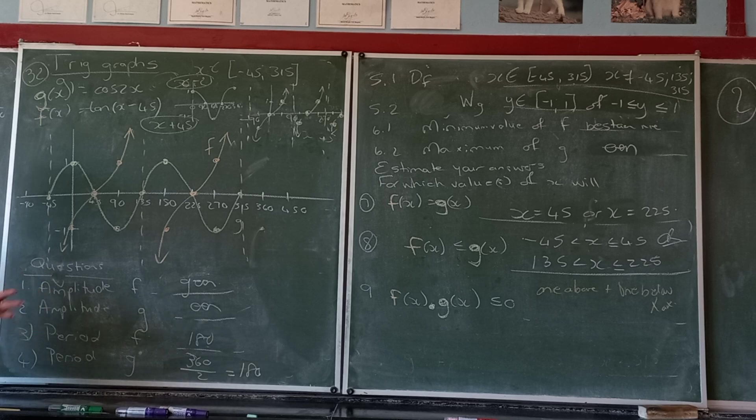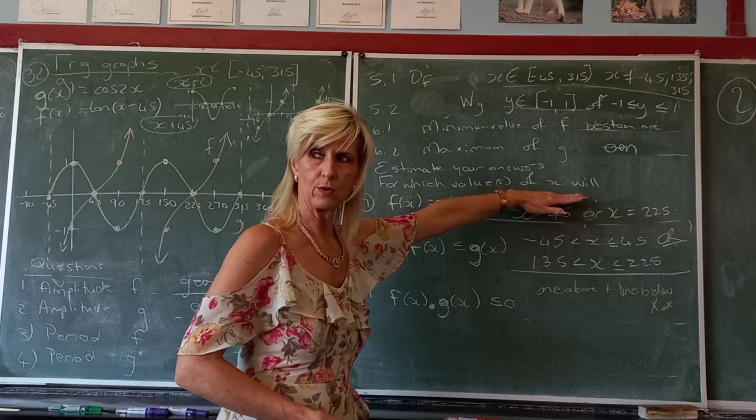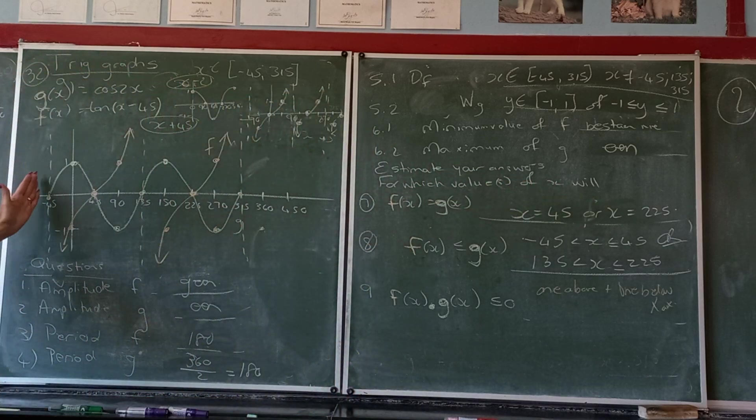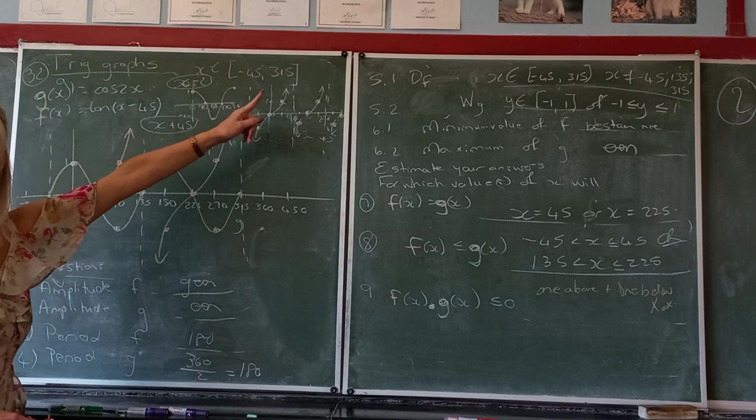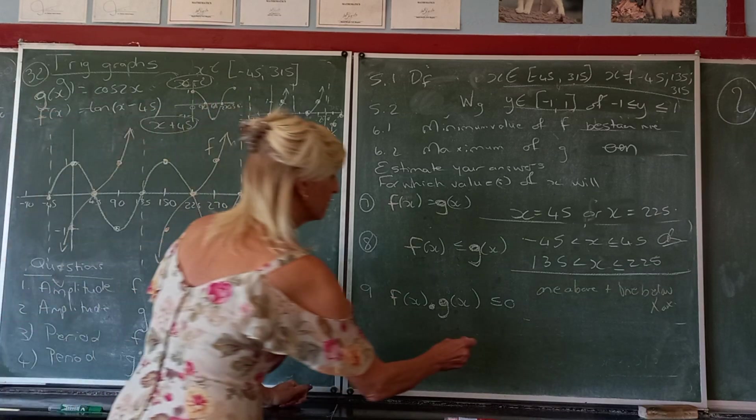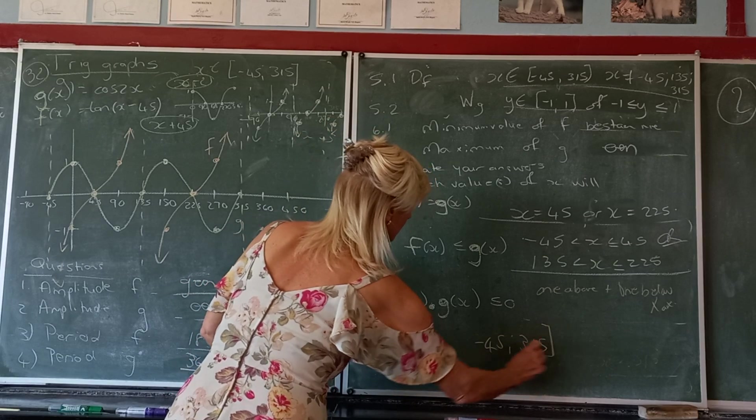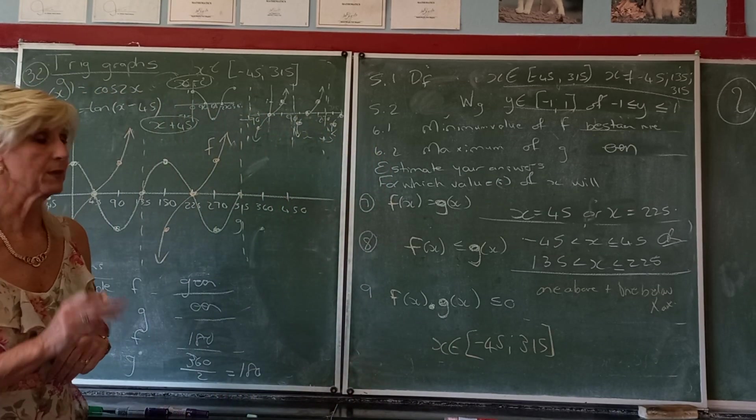All the time. But how do I write all the time? For which values of x will this happen? For x from negative 45 up to? In other words, my domain that they've given to me. From negative 45 up to 315. And since they've given me that answer, it needs a full notation. I just write it like that.